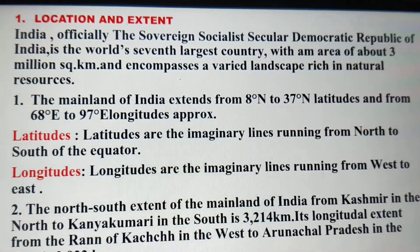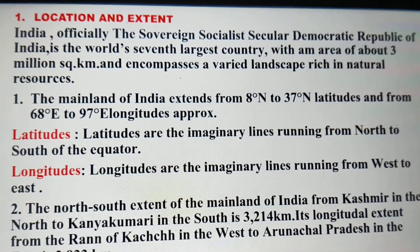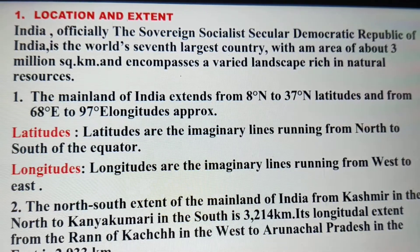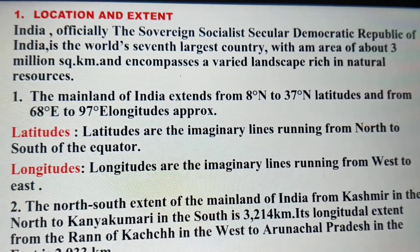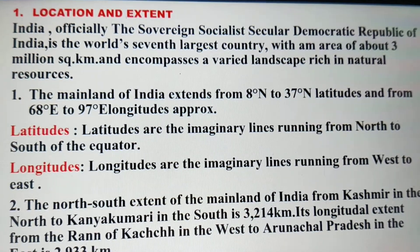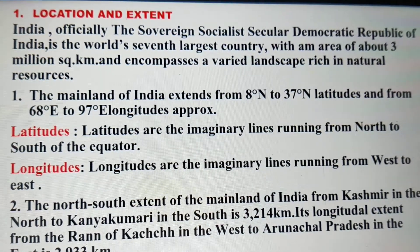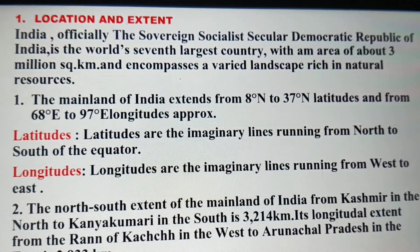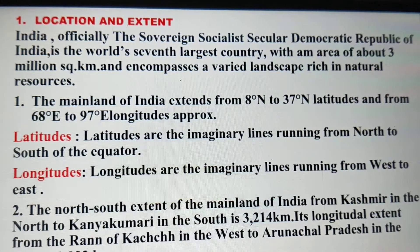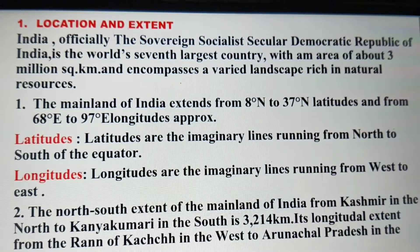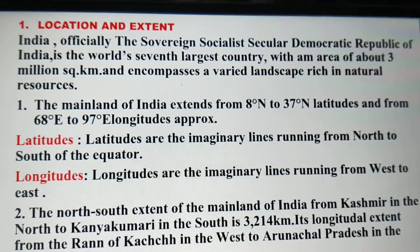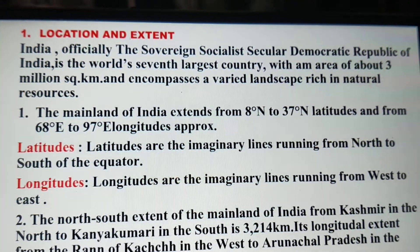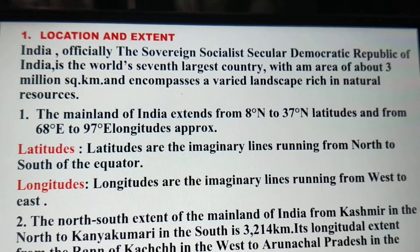The mainland of India extends from 8° north to 37° north latitudes and from 68° east to 97° east longitude approximately. You need to remember these coordinates, as from an examination point of view it is very important that India extends at 8° north to 37° north latitudes and 68° east to 97° east longitude.